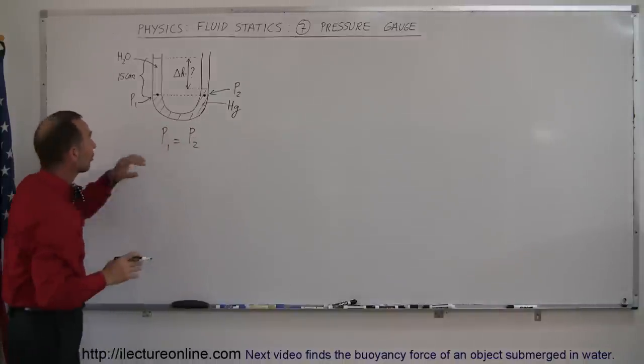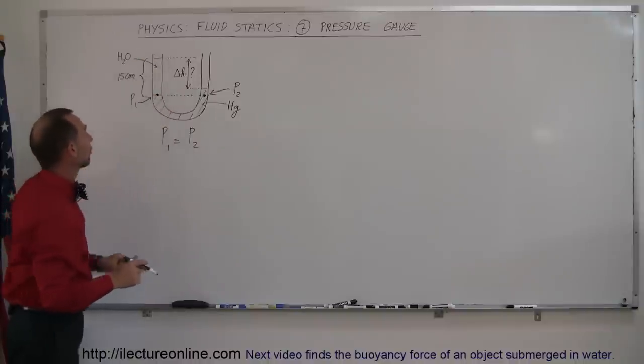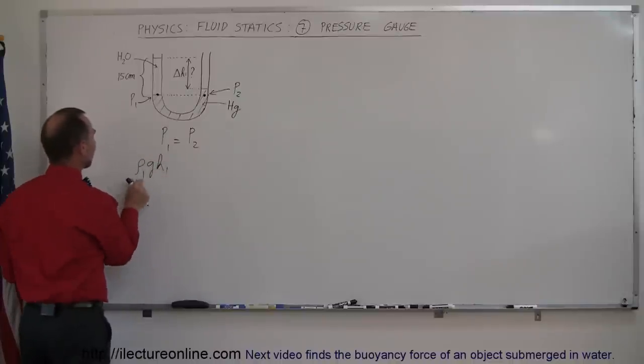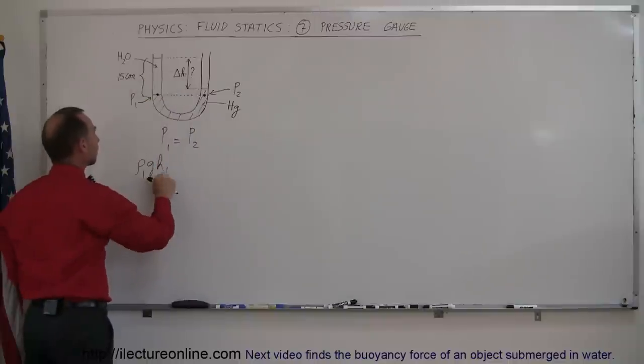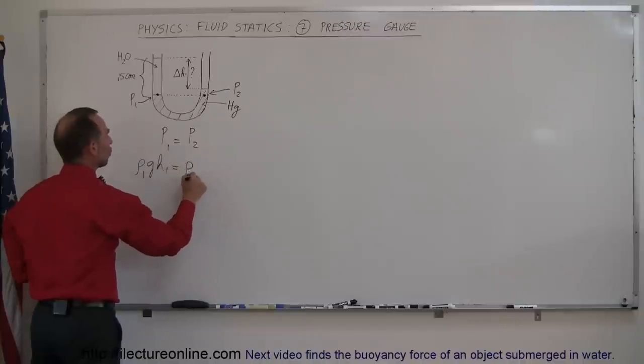And of course we know that pressure inside a fluid is caused by the density of the fluid and the depth of the fluid. So we can say that pressure 1 can be written as ρ1gh1, which means the density of fluid on this side and the height of the fluid on this side, equals ρ2gh2, which means the density of the liquid above this point on the right side and the height on the right side.